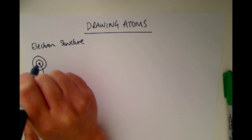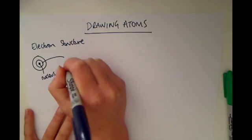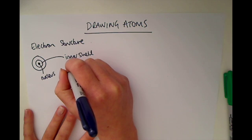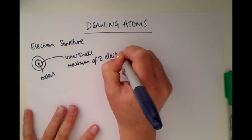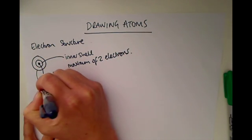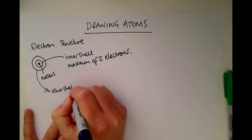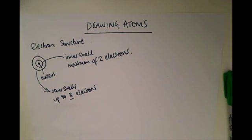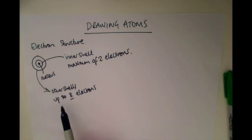Now these electron shells have very particular rules. The very inner shell can only hold up to two electrons — so a maximum of two electrons. Any other shell outside can have up to eight electrons. That's a really important rule when drawing the electron structure of atoms: the inner shell can only have two and outer shells can have up to eight electrons.